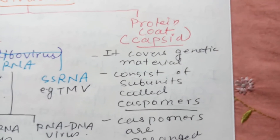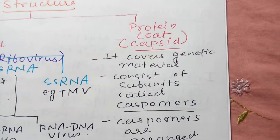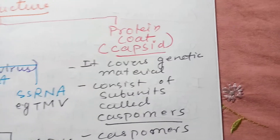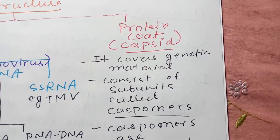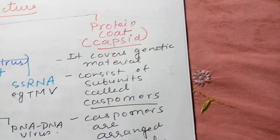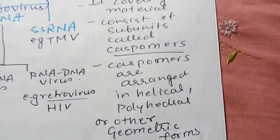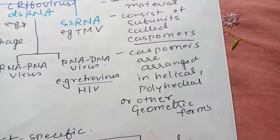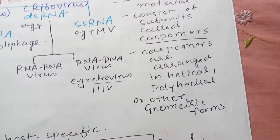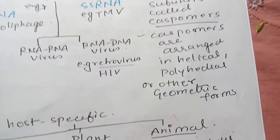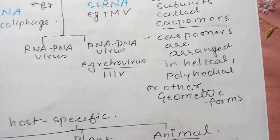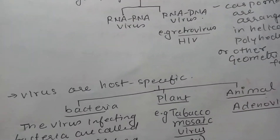Now looking at the protein coat: it encapsulates or covers the genetic material. It consists of subunits called capsomers. Capsomers are arranged in helical, polyhedral, or other geometric forms. So the different shapes of viruses actually depend on how the protein coat is arranged around the genetic material.